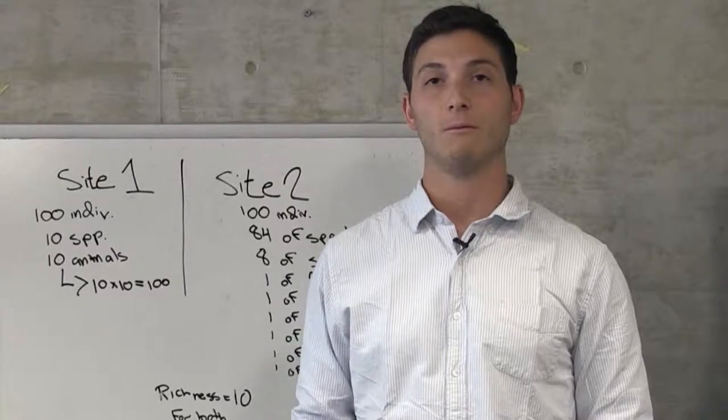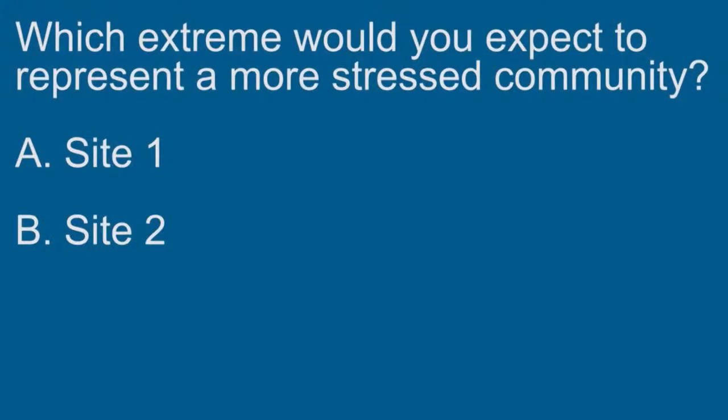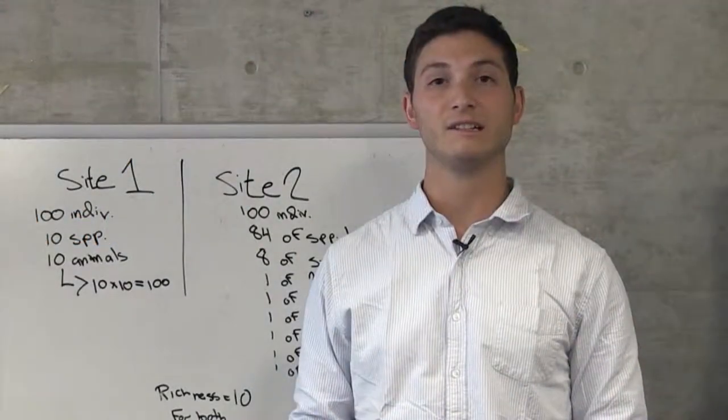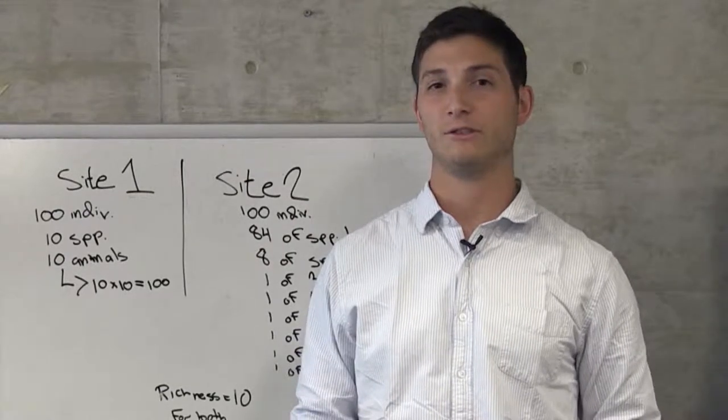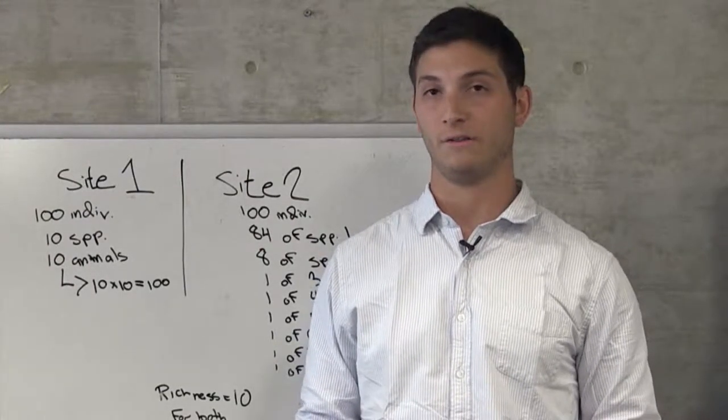Question for you. With those examples in mind, which extreme would you expect to represent a more stressed community? Right, the second example with 84 individuals of species 1 is more stressed because the evenness is low, and there's only one species that dominates the overall environment.